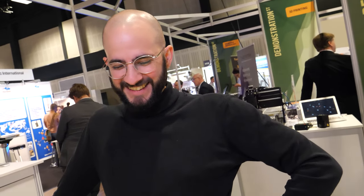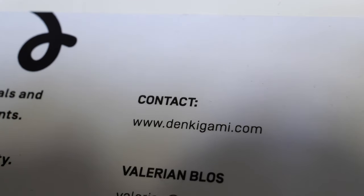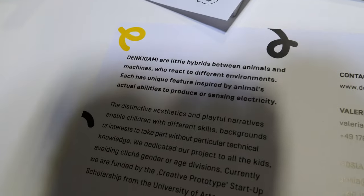All right, cool. All right, so there you have it. People can find you right here. Denkigami. What's the idea about this name? Denkigami is Japanese for electronic paper. You know origami? It's foldable paper and Denki is electronic. Yeah. So...